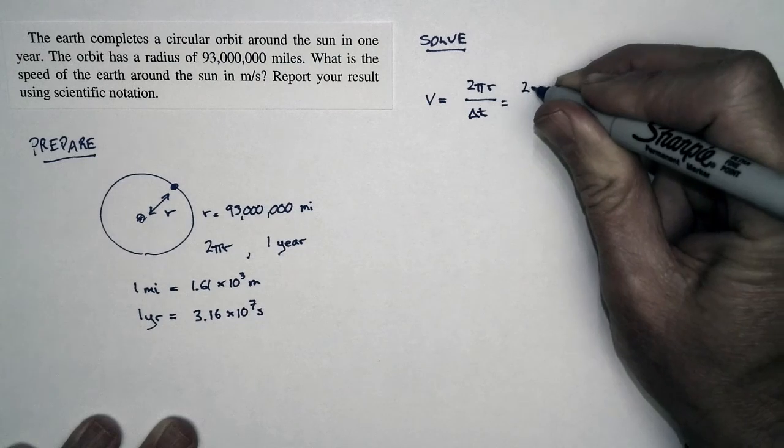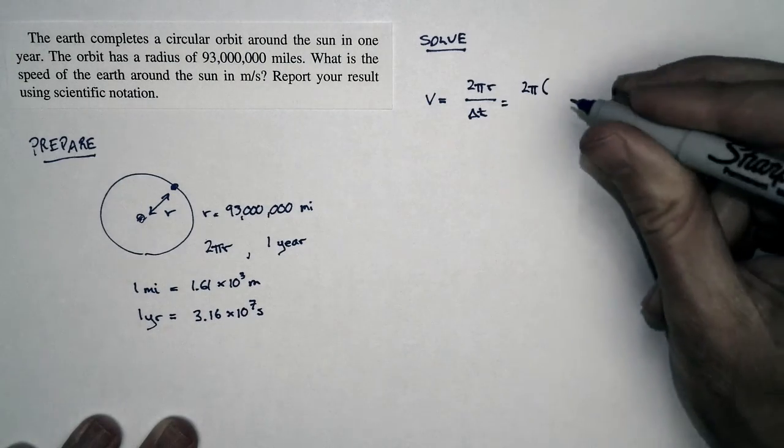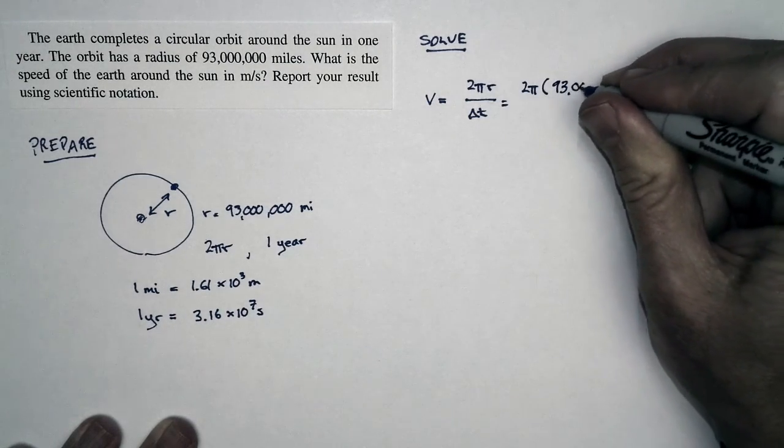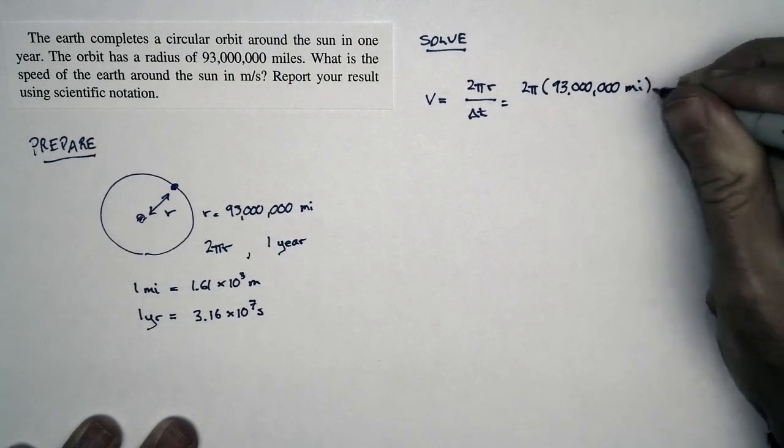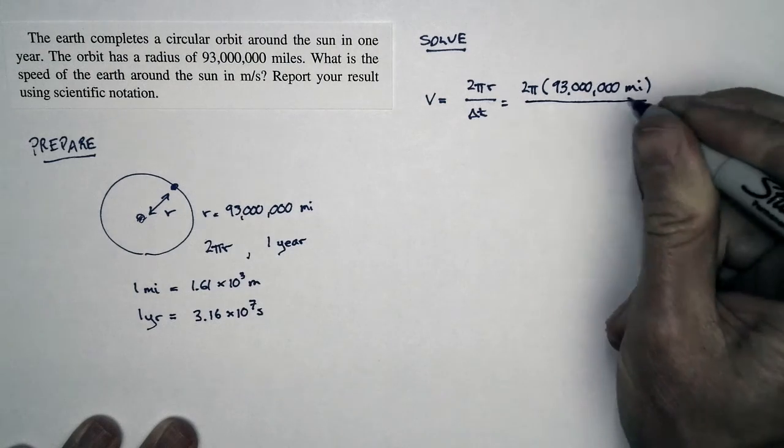The distance is 2π times 93 million miles. That's our distance. The time interval is just one year.